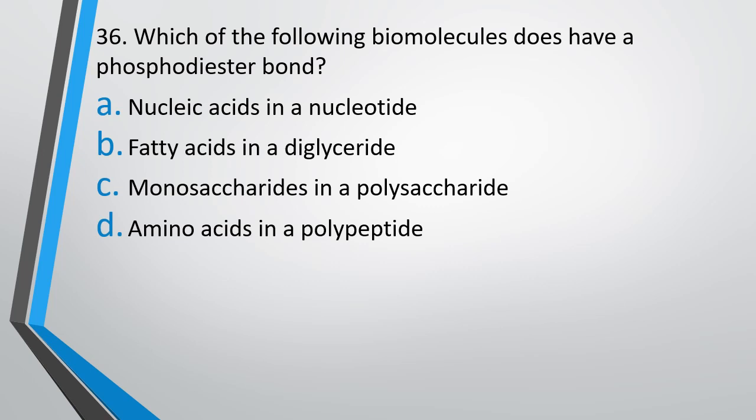Question number 36. Which of the following biomolecules does have a phosphodiester bond? (A) Nucleic acid in nucleotide, (B) fatty acid in diglyceride, (C) monosaccharides in polysaccharide, or (D) amino acids in polypeptide? The correct answer is option A — nucleic acid in nucleotide.